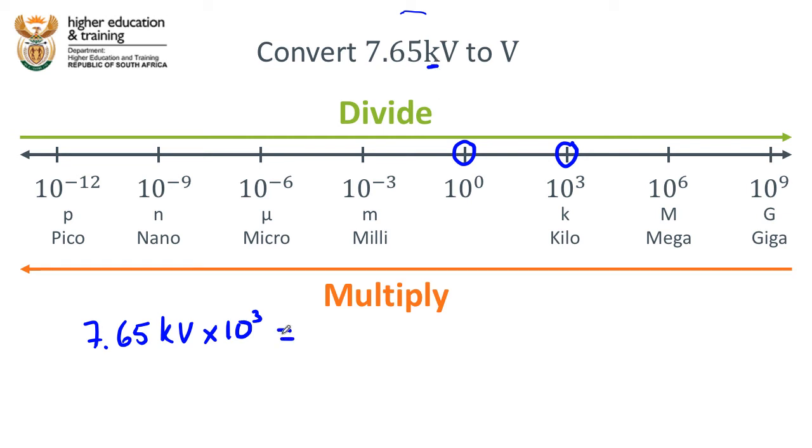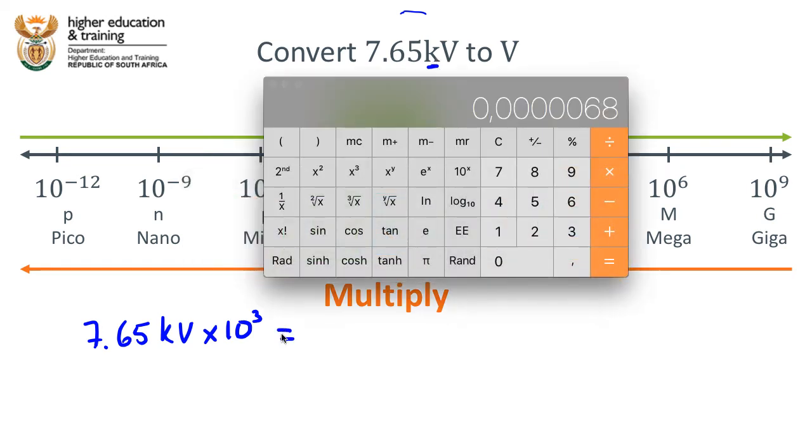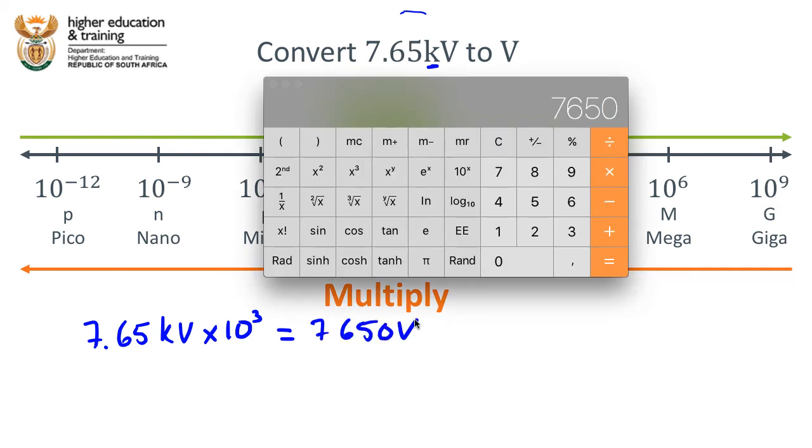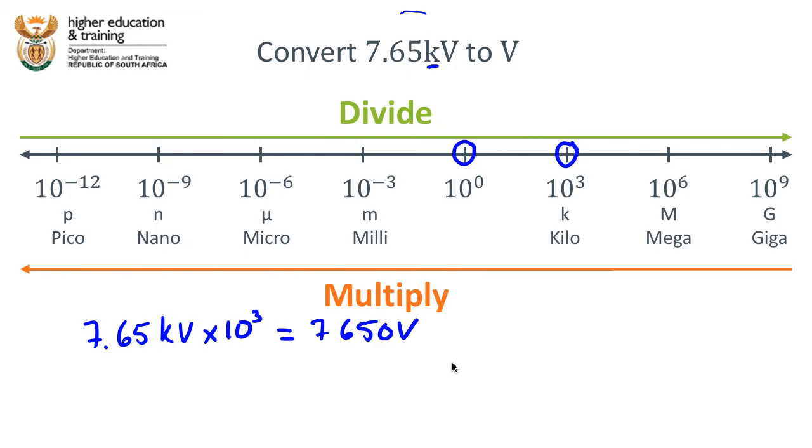So that is equal to, and if you need help with the calculator, let's quickly do it together on the calculator. That would be 7.65, you could either go straight to the 1,000 and you'll get 7,650, or if you like you could go 7.65 multiplied by 10 raised to the power 3. 7,650.